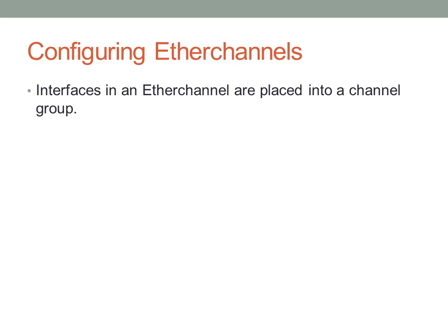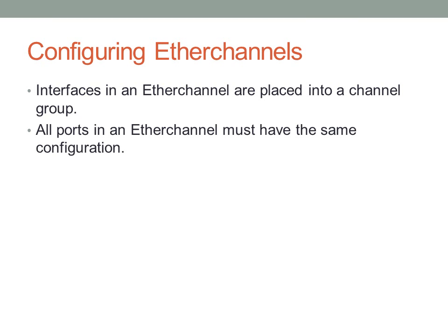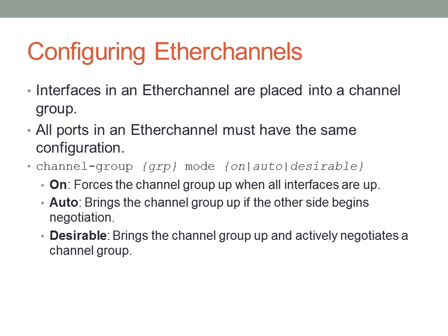Configuring EtherChannels is straightforward — you add the interface to a channel group and specify a mode. The channel group itself is a virtual interface, and all ports in an EtherChannel need to have the same configuration. The mode can be 'on', 'auto', or 'desirable'. 'On' forces the channel group up as long as all ports are up. 'Auto' and 'desirable' work the same way as for trunks — auto will not initiate negotiation, desirable will.